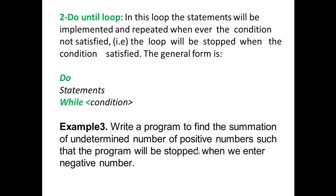The second conditional loop statement is the do-while loop. In this loop, the statements will be implemented and repeated; whenever the condition is not satisfied, the loop will be stopped when the condition is satisfied. The general form is: do — statements — while condition. Example 3: write a program to find the summation of an undetermined number of positive numbers such that the program will be stopped when we enter a negative number.